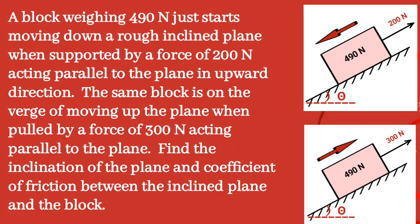Given question: a block weighing 490 N just starts moving down a rough inclined plane when supported by a force of 200 N acting parallel to the plane in the upward direction. The same block is on the verge of moving up the plane when pulled by a force of 300 N acting parallel to the plane. Find the inclination of the plane and the coefficient of friction between the inclined plane and the block.